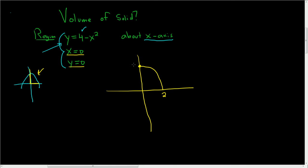So this is 2 and this is 4 because it's shifted up by 4. The reason that this is 2 is because if you plug in 2 here, you end up with 4 minus 2 squared, which is 4 minus 4, which is 0. And we're spinning it about the x-axis.